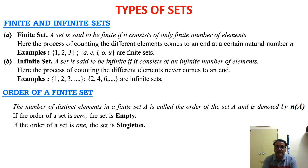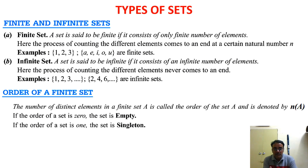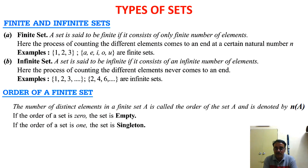An infinite set is one that consists of an infinite number of elements — countless elements with no end. For example, the set {1, 2, 3, ...} goes up to infinity. You cannot count the number of elements in this type of set, so these are examples of infinite sets.